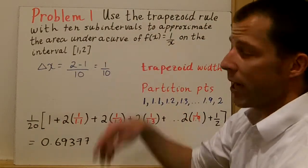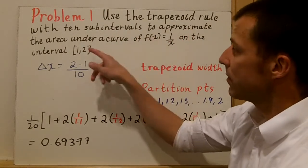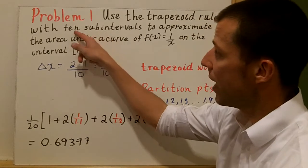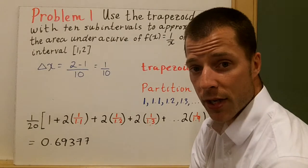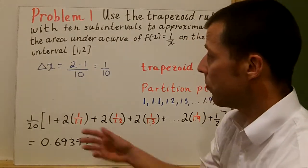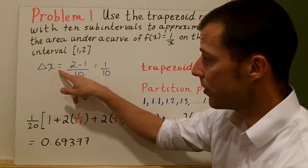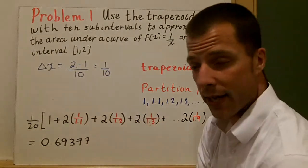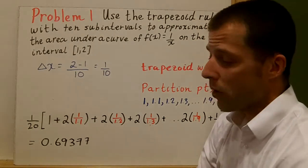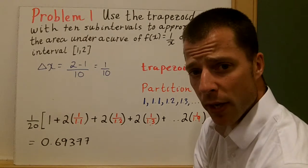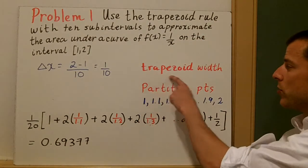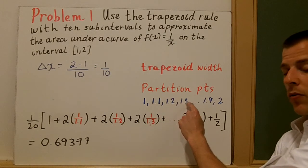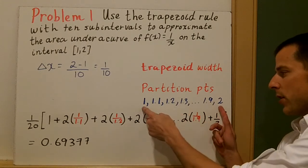In problem one, we use the trapezoid rule with 10 sub-intervals to approximate the area under f of x equals 1 over x on the interval from 1 to 2. We have a equals 1, b equals 2, and n equals 10. First, we find delta x: b minus a over n equals 2 minus 1 over 10, which equals one tenth. So each trapezoid has a width of one tenth, giving us partition points at 1, 1.1, 1.2, 1.3, 1.4, all the way to 1.9 and 2.